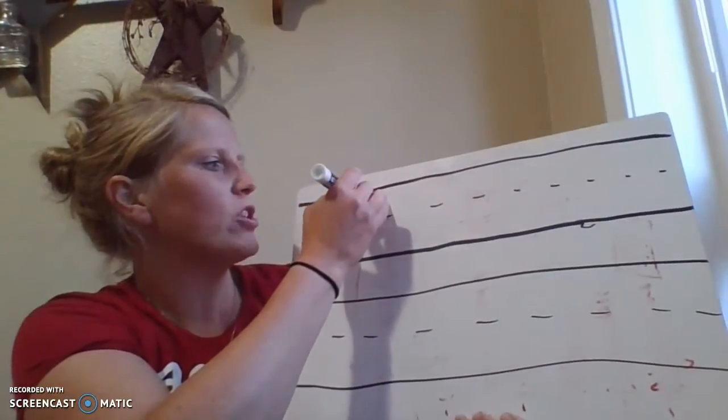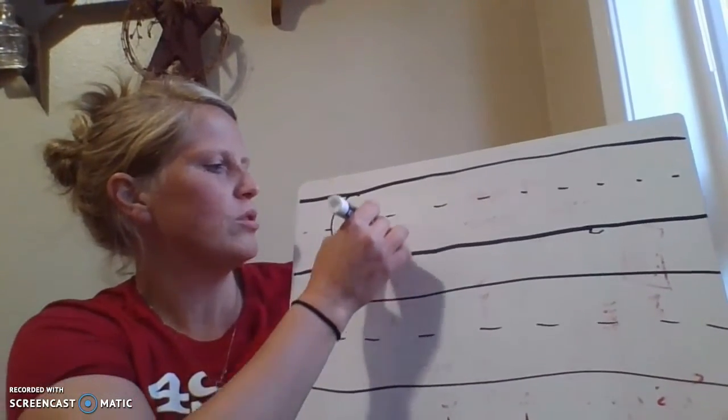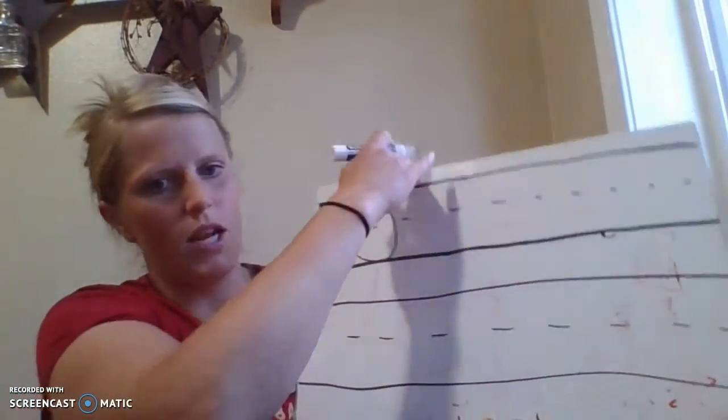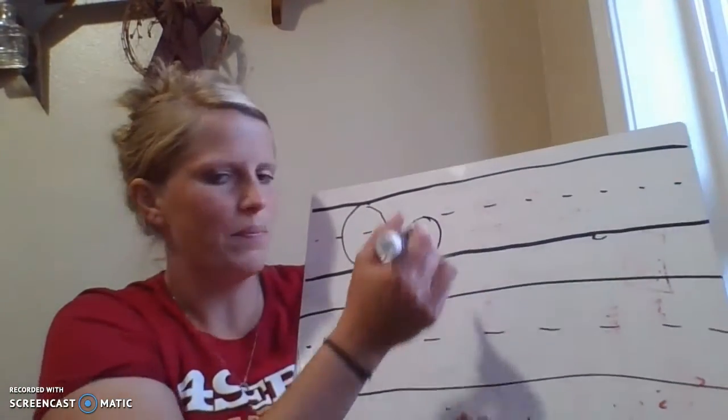So for a capital O we start at the top, we do a magic C, and we close it up. For a little O, we start in the middle, we do a magic C, and we close it up.